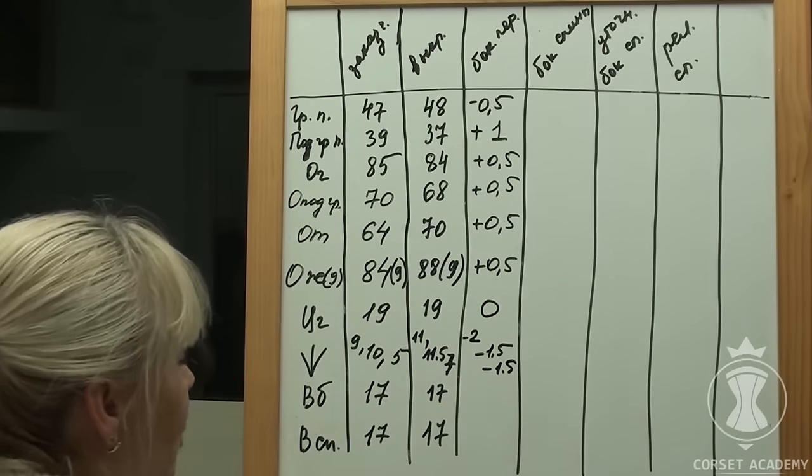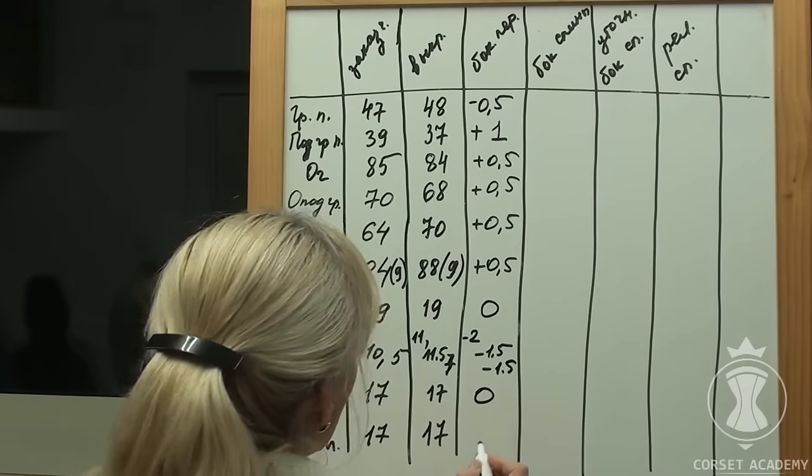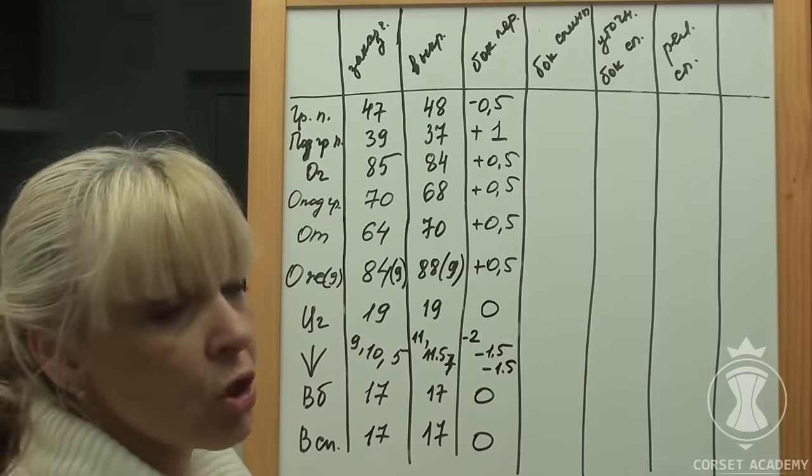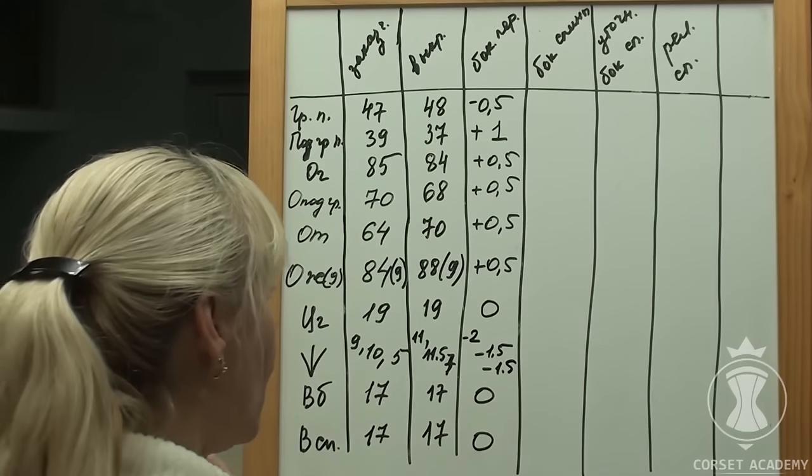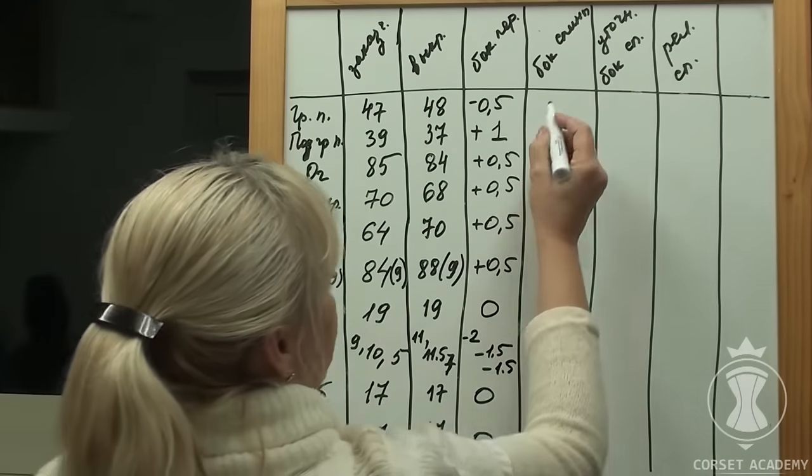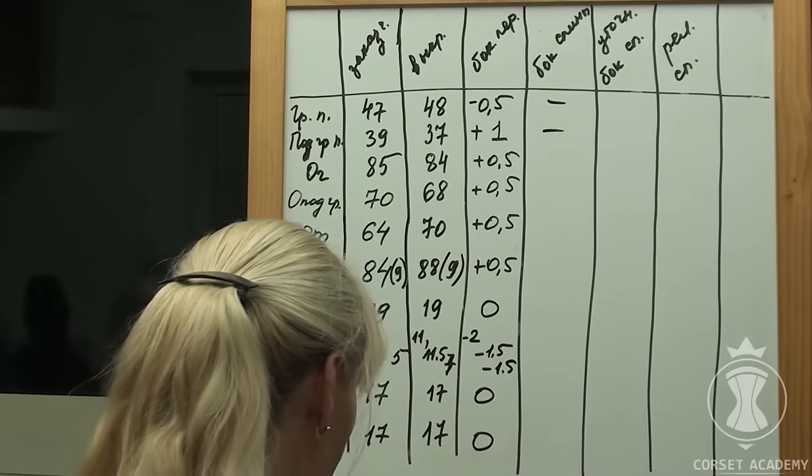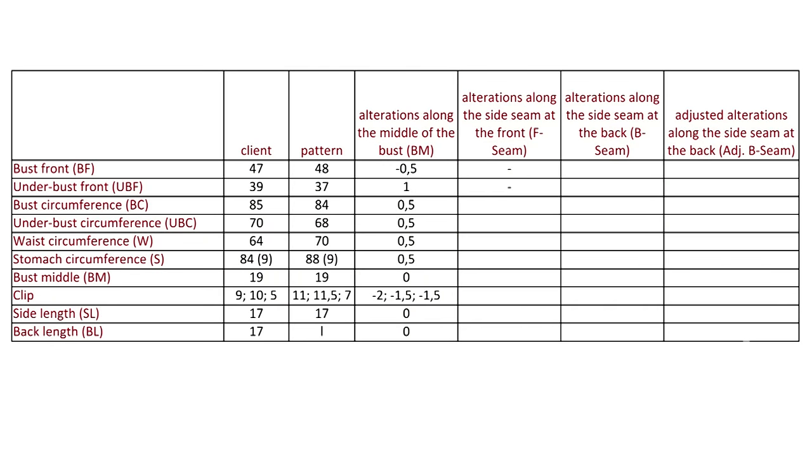The side length and the back length measurements coincide, so I write zeros in the table. Now I can look at the side seam of the back and see what happens there. All calculations are filled in to column 5. Bust front and underbust front measurements are not relevant in these calculations, so I write dashes in the table.